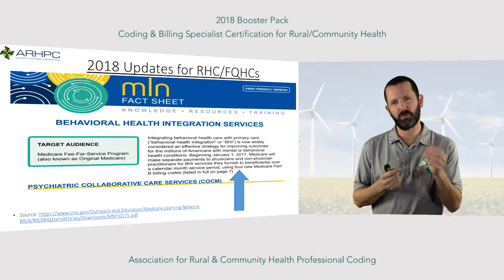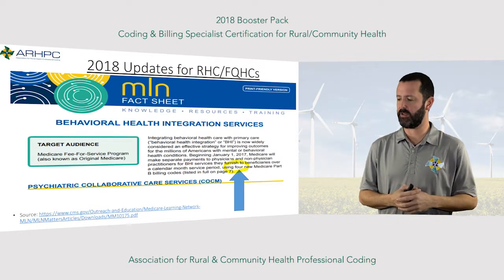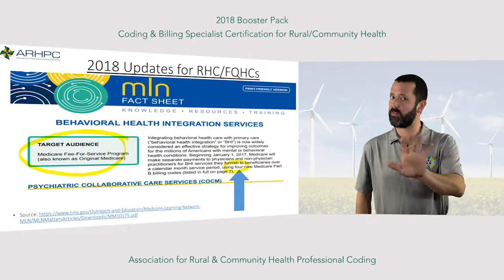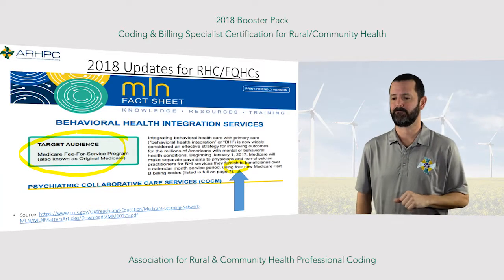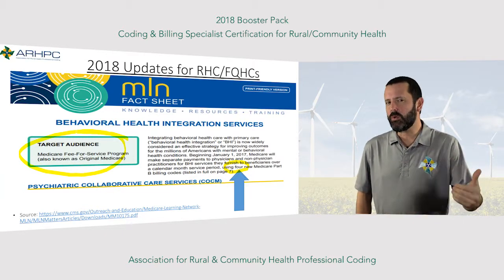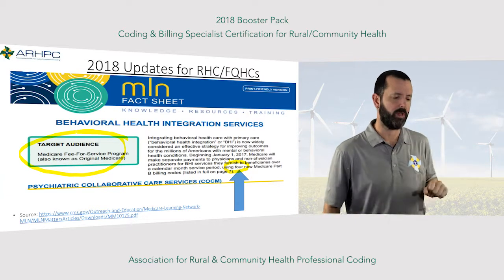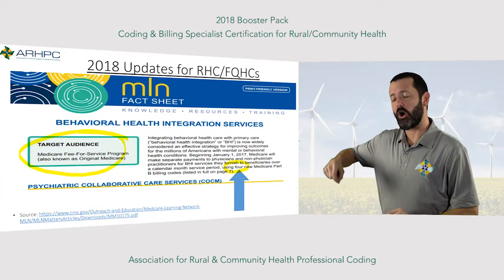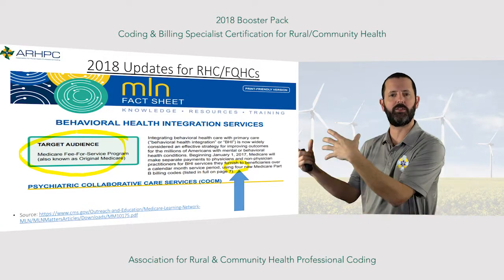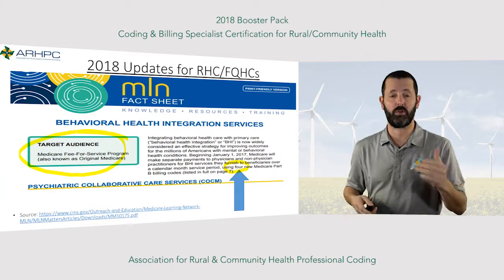Please note that although the target audience for this particular document is traditional fee-for-service providers, that is most likely not where you're working. It's vital to realize that although rural health and community health centers bill the majority of covered claims on the CMS 1450 form — the old UB form — we are Part B Medicare providers. You must have Medicare Part B insurance to have coverage in a rural health clinic or an FQHC. We are Part B providers, not Part A, in a rural health clinic and an FQHC.